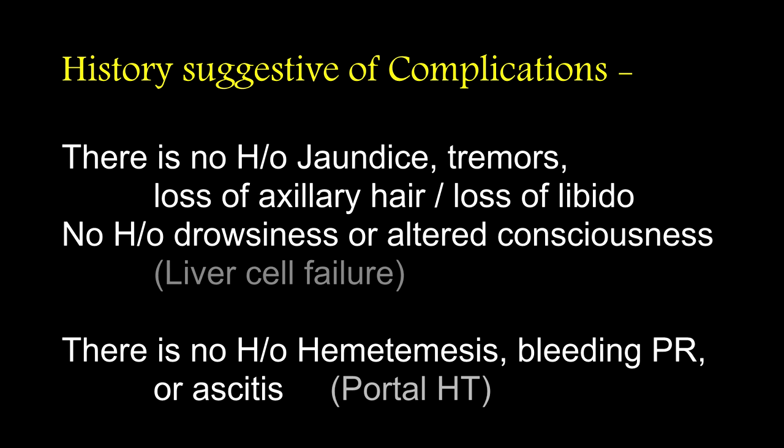Regarding history suggesting liver cell failure: there is no history of jaundice, tremors, loss of axillary hair or loss of libido. No history of drowsiness or altered consciousness. No history of hematemesis, bleeding per rectum or ascites. What is the earliest manifestation of liver cell failure? Jaundice is the first sign to appear in case of liver cell failure.